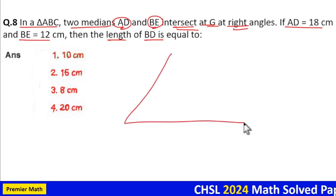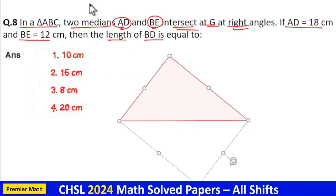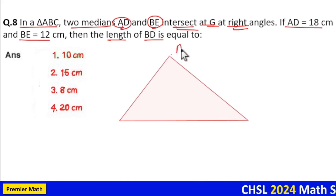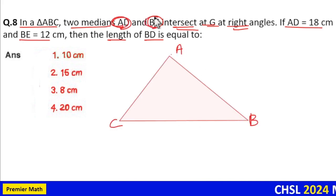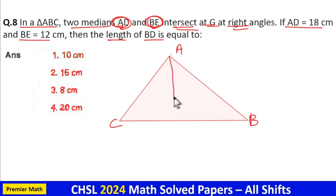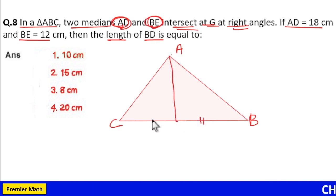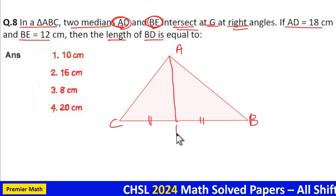Here, this is the triangle ABC. Two medians AD and BE. Median always bisects the base. These two lengths are equal.